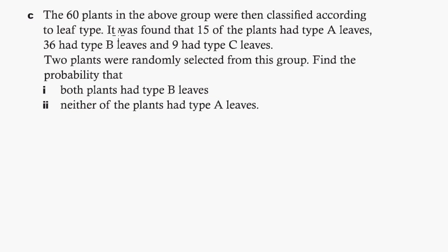Okay, so now let's look at the last part. It says the 60 plants in the above group were then classified according to leaf type. They had type A leaves, and that's original, B leaves, and C leaves. No problem. So, two plants were randomly selected. Anytime you see something like this, and the way these problems always work is they go from simple probability to independent probability, which in which case is, it's not hard, but it just gets a little one more step. So it says find the probability that they're both B leaves.